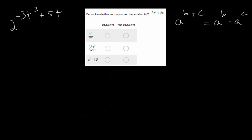So for us, we have 2 to the first term in the sum, which is minus 3t cubed, multiplied by 2 to the 5t power.